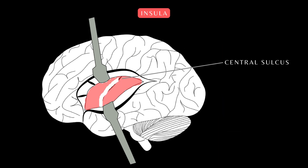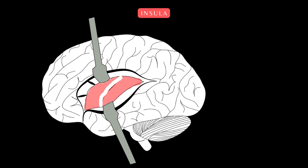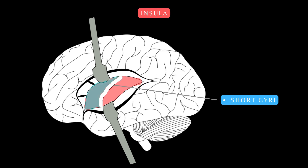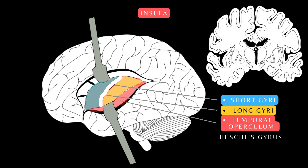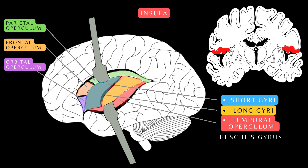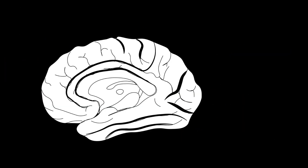This lobe also has a central sulcus which gives rise to a set of short gyri and long gyri. Inferiorly is the temporal operculum, also known as Heschl's gyrus. The coronal section of the brain demonstrates the location of the temporal operculum in relation to the insula. Situated superiorly are the parietal, frontal, and orbital operculum.